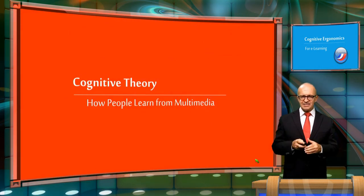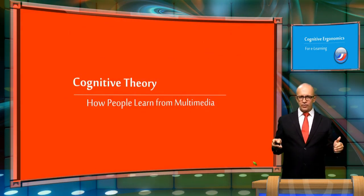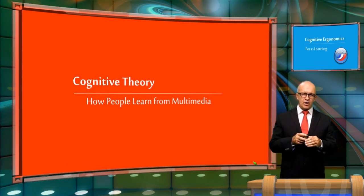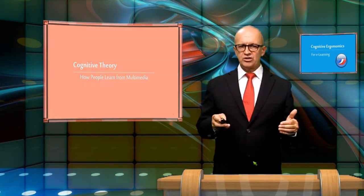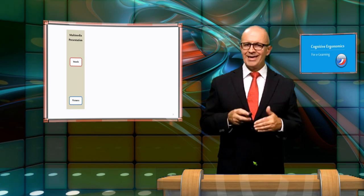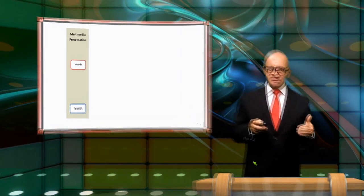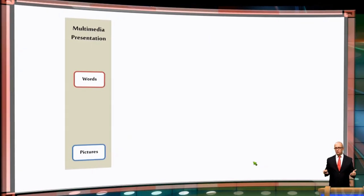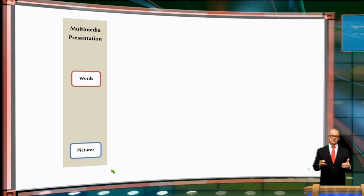Now, let's take a look at the cognitive theory. It describes how people learn from multimedia content, including videos, presentations, and e-learning modules. First of all, it's important to consider the learner's brain as a cognitive processing system.